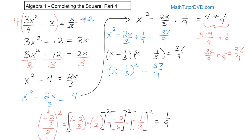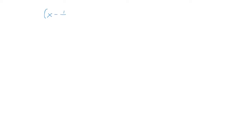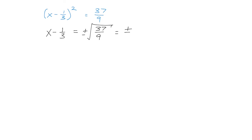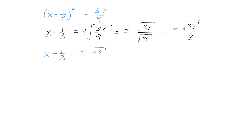We can write it as x minus 1 third squared equals 37 ninths. To solve this, we take the square root of the left, leaving x minus 1 third. On the right, we have plus or minus the square root of 37 ninths, which we can write as the square root of 37 on top and the square root of 9 on the bottom. We can't simplify the square root of 37, but the square root of 9 is 3. So x minus 1 third equals plus or minus square root of 37 over 3.